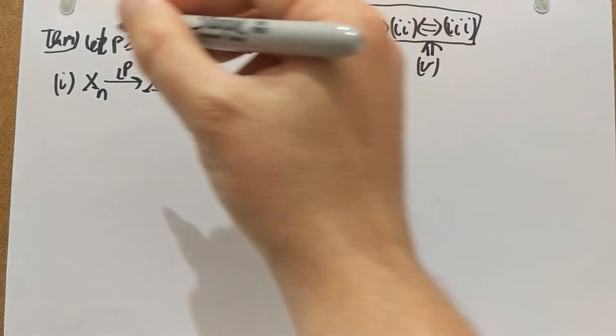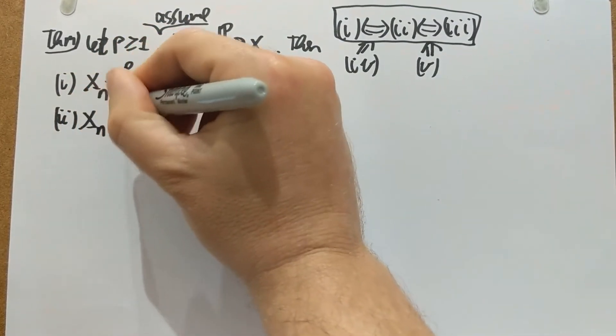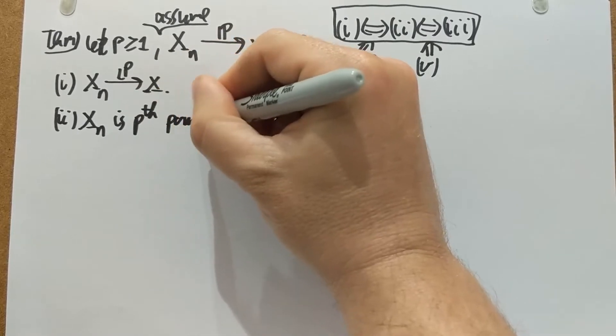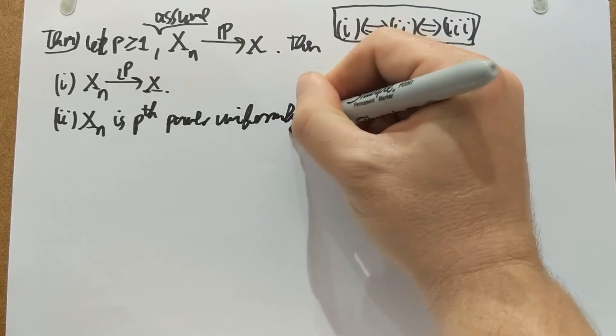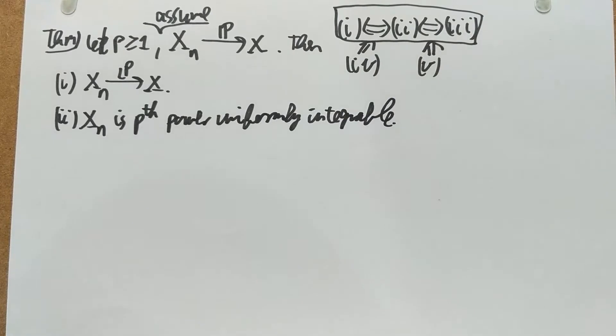Statement two is that xn is p's power uniformly integrable. That's statement two.